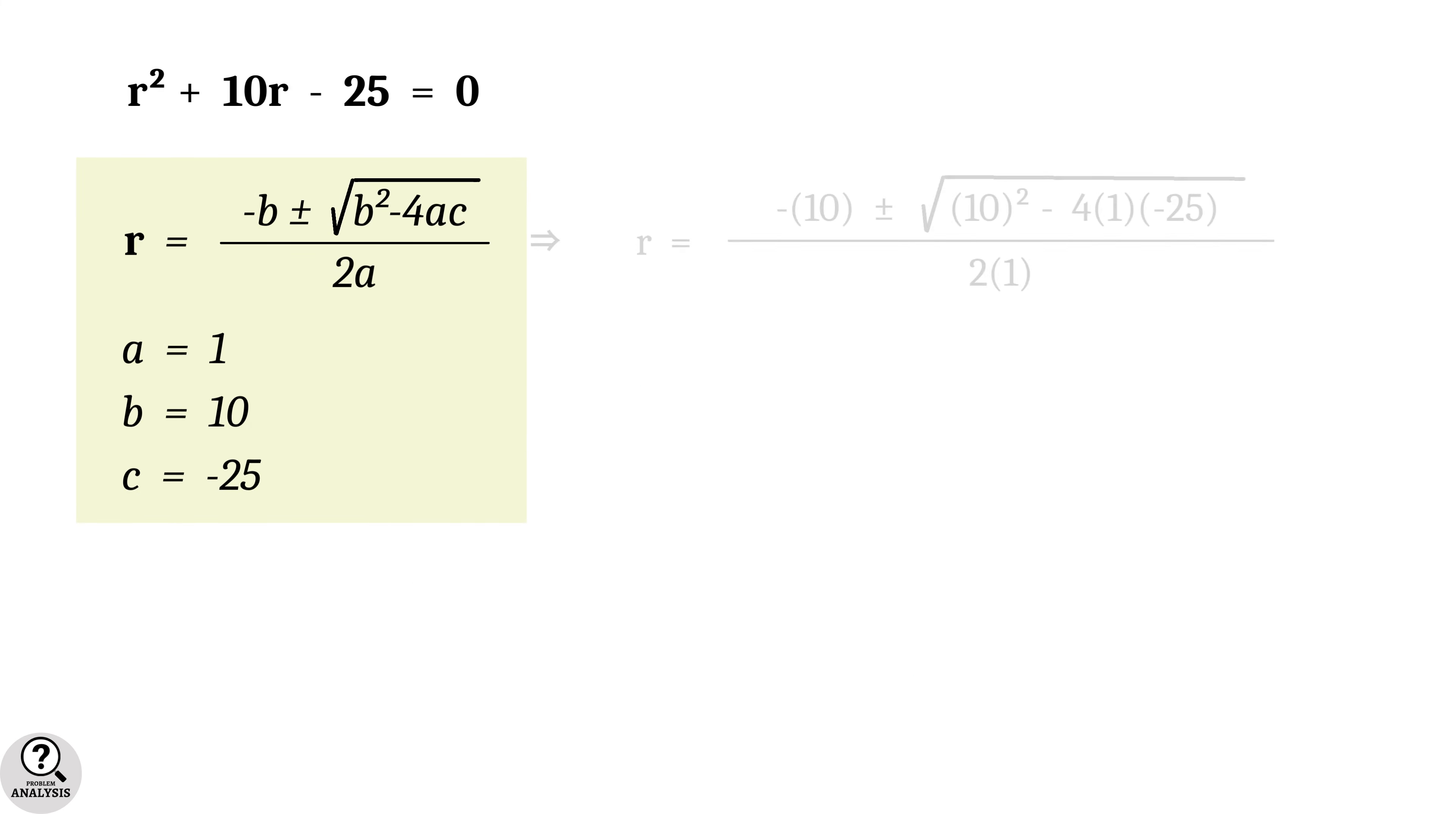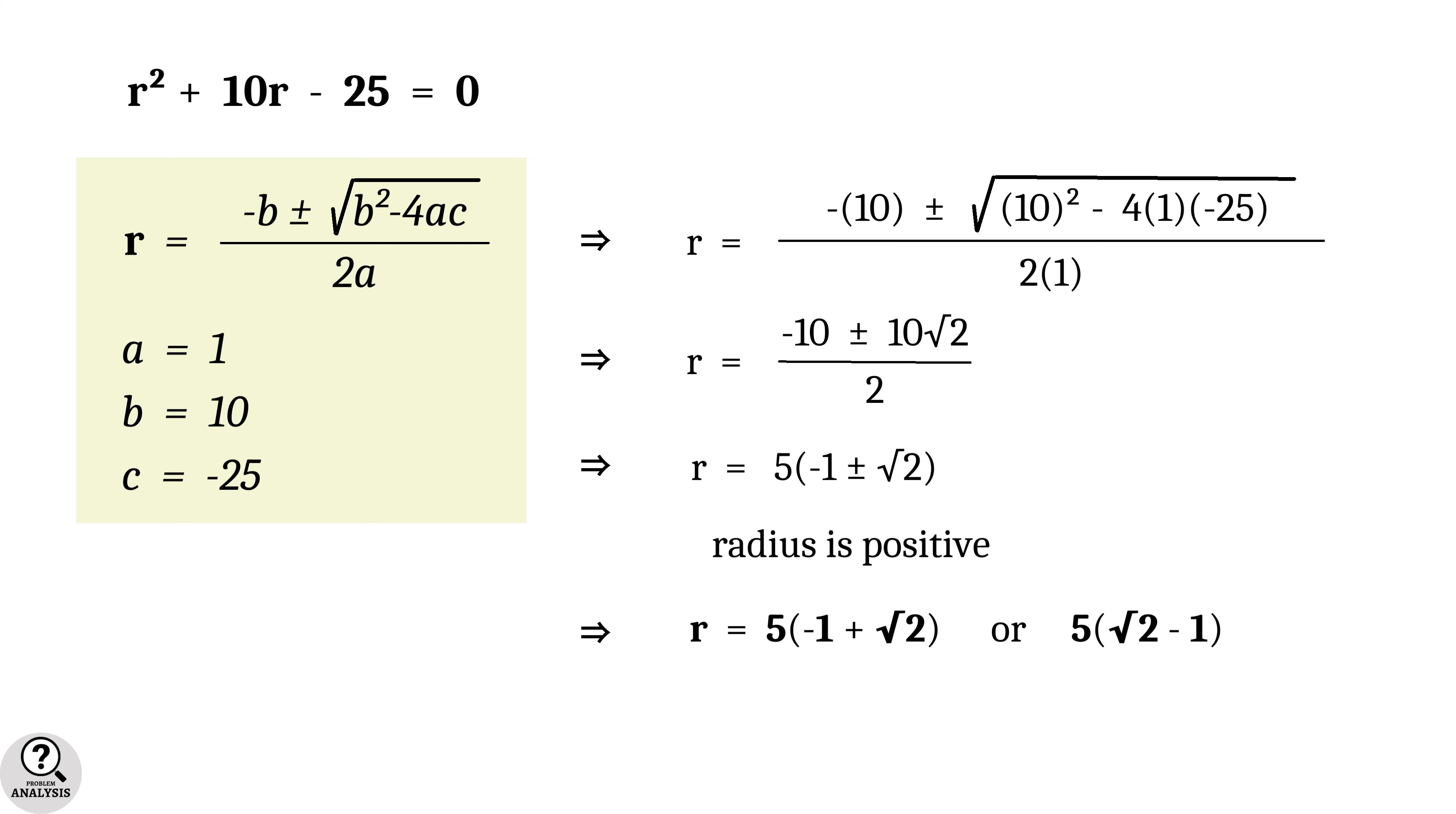Now substitute in the formula and solve the equation. Finally, we will get r equal to 5 into minus 1 plus or minus root 2. But r is the radius of the circle which is always positive. That implies r equal to 5 into minus 1 plus root 2 or 5 into root 2 minus 1.